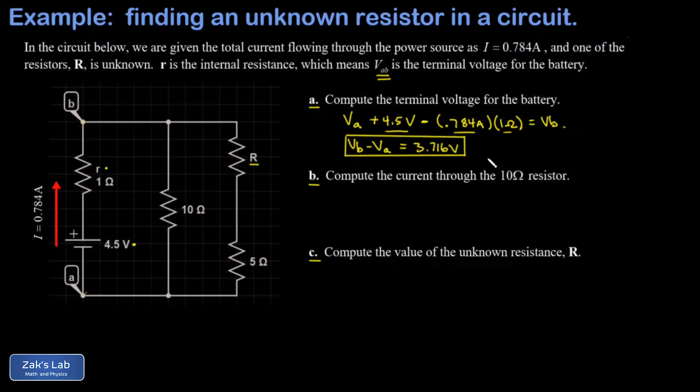Now, it's not necessary to be that formal about computing the terminal voltage. I could just say, well, here's my ideal power source, 4.5 volts minus the drop over the internal resistance, which is given by IR. So just 4.5 minus IR.